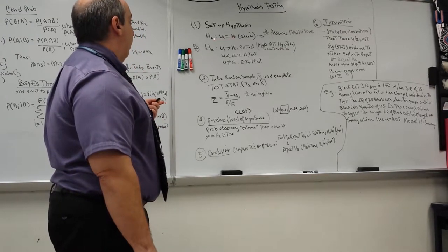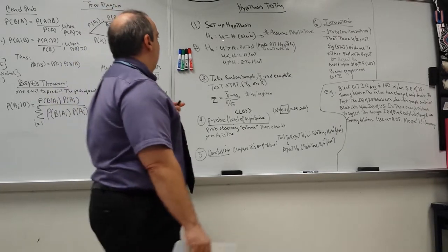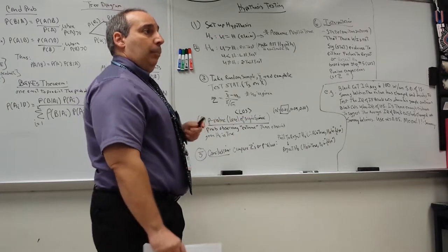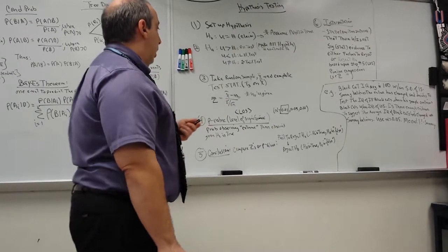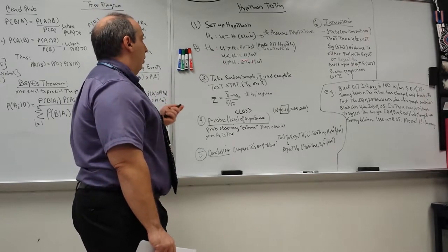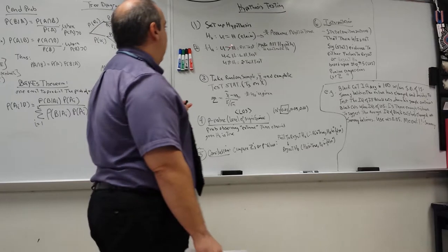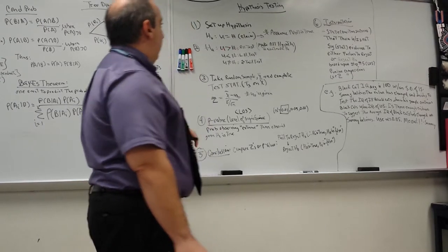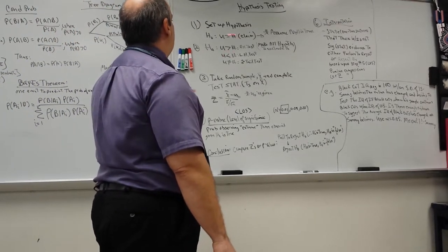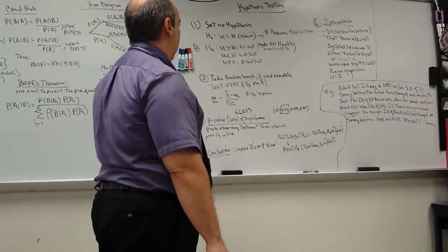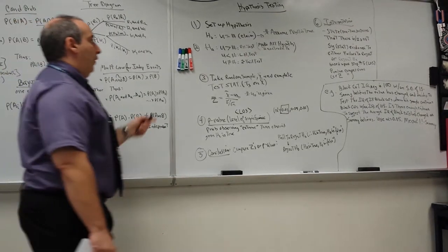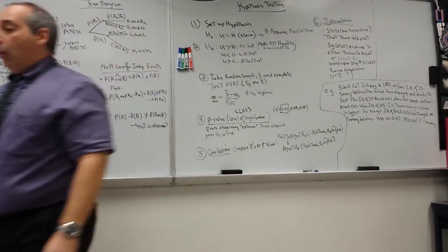Going back to the null hypothesis: it says the mean mu is some certain number — whatever the claim is. I come around and I want to test it. So the alternative hypothesis Hₐ can say: mu is greater than the claimed number — that's a right-hand test; mu is less than the number — a left-hand test; or mu is not equal to the number — a two-tail test.